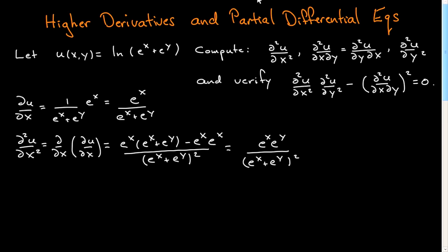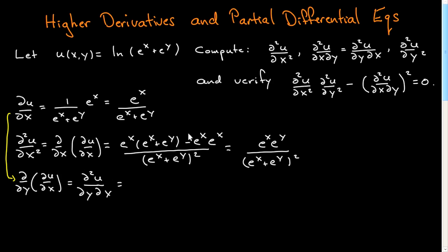Now I'll bring this down and differentiate with respect to y — so I'll do d by dy of what I computed for d by dx. I have to differentiate with respect to y; the x's are constant here. I'll pick up a minus, times e to the x plus e to the y squared, times the derivative of that, which gives me an e to the y on top.